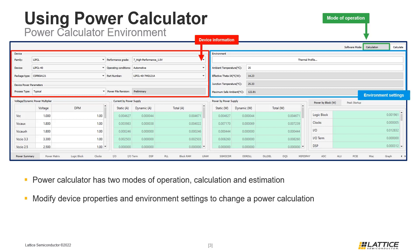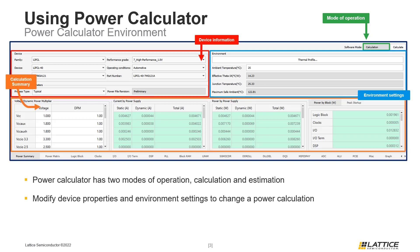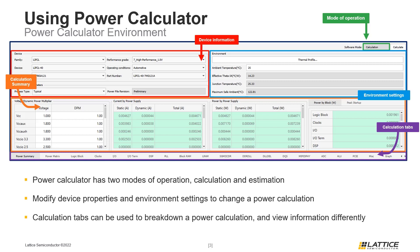Underneath the Device Information and Environment Settings sections is the Power Calculation Summary. A summary of the calculated power consumption can be found in this section. At the bottom of the Power Calculator window are the Power Calculation tabs. These tabs contain specific information about the power consumption of a design by breaking it down into several different components and sections. Some of these tabs, like Clocks and I/O, can be used to view and modify information pertaining to the power consumption for those components. The information in these tabs is used to calculate the total power consumption for a design. We are now going to briefly review the basics for some of Power Calculator's main tabs.